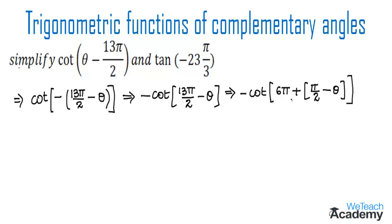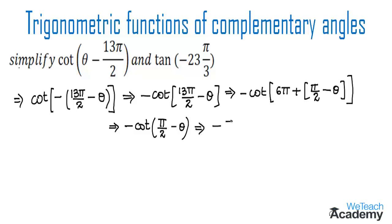This is in the form of cot(180° + θ), which lies in the third quadrant. In the third quadrant only tan and cot are positive, and all other ratios are negative. So we get minus cot(π/2 − θ). Now this is in the form of cot(90° − θ), and applying the complementary angle identity we get minus tan(θ), which is the result of cot(θ − 13π/2).